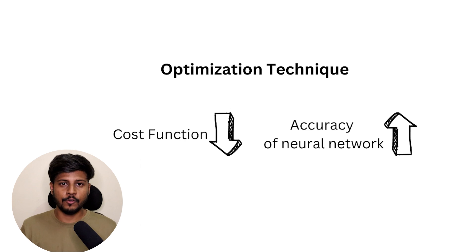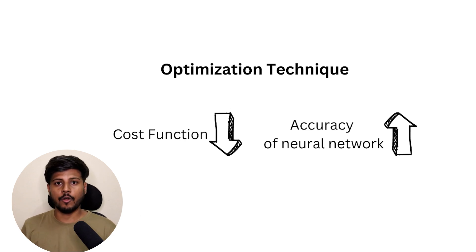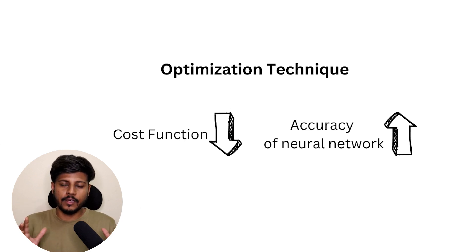The relationship between optimization techniques and the cost function is very important — the cost function guides the optimization technique in order to make the neural network more accurate. They are very closely connected to each other. This covers the process of optimization and how the cost function and activation function all work together. In the next lesson we are going to learn about different types of optimization techniques and how to implement them. Till then, keep learning, keep exploring, and stay motivated.